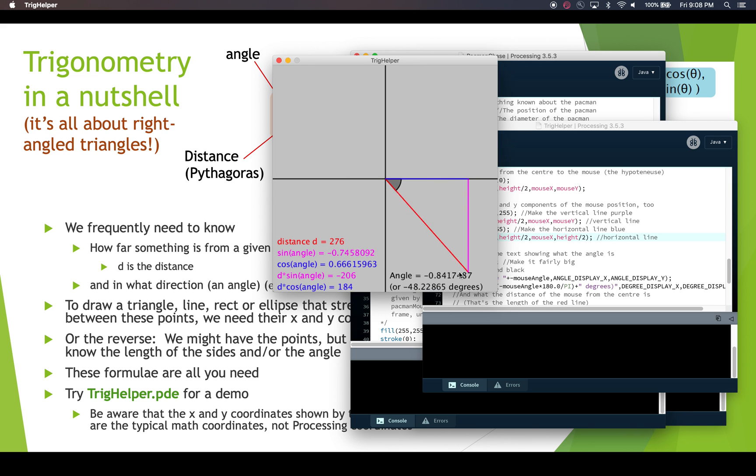You can see the angle in the middle is being calculated and written down here in radians and in degrees. Processing always uses radians by default. The distance gets really big as we stretch this out. The pink line is the opposite side of the right angle triangle.